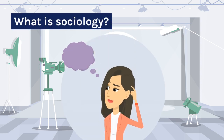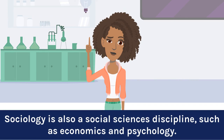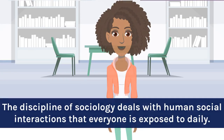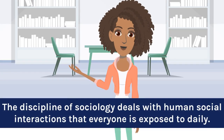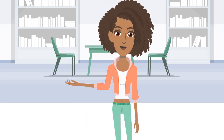What is Sociology? Sociology is the scientific study of human society and behavior. Sociology is also a social sciences discipline, such as economics and psychology. The discipline of sociology deals with human social interactions that everyone is exposed to daily.